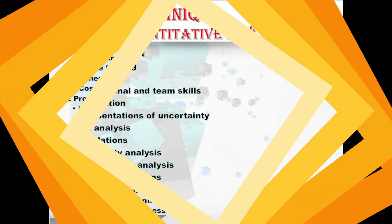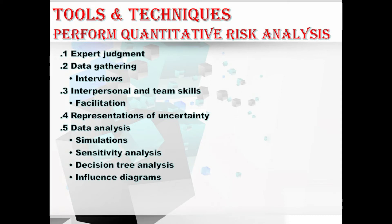In tools and techniques, first we have expert judgment. Expertise should be considered from individuals or groups with specialized knowledge or training related to this process. The areas include: translating information on individual project risk and other sources of uncertainty into numeric inputs for the quantitative risk analysis model; selecting the most appropriate representation of uncertainty to model particular risks; modeling techniques appropriate in the context of the project; identifying which tools would be most suitable for the selected modeling techniques; and interpreting the outputs of quantitative risk analysis.